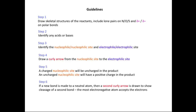In step six, if a new bond is made to a neutral atom, then a second curly arrow is drawn to show cleavage of a second bond, and the most electronegative atom accepts the electrons. Finally, in step seven, we're going to add any charges. The overall charge of the reactants should be the same as that of the products.